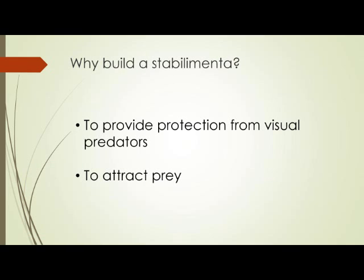But is camouflage the only reason why they build a stabilimentum? Why should this tiny creature invest so much time and resources in producing so much silk for this elaborate design? The functions of the stabilimentum remain controversial, but there are two main hypotheses. Both deal with the fact that it is very reflective. The first is that it provides defense against visually hunting predators by masking the spider's position. The silk is highly reflective, so rather than marking the spider's location like an X on a treasure map, it's so reflective that the predator sees a big bright spot but not the spider.